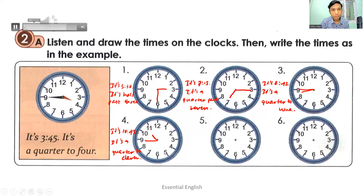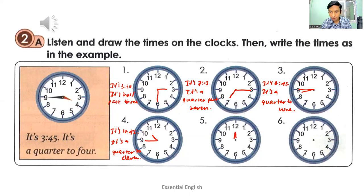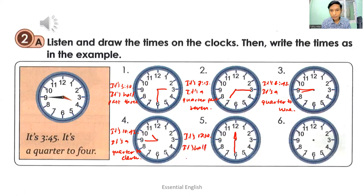Number five: it's twelve thirty — it's half past twelve. This is the hour hand and this is the minute hand showing twelve thirty. In other words, it's half past twelve.